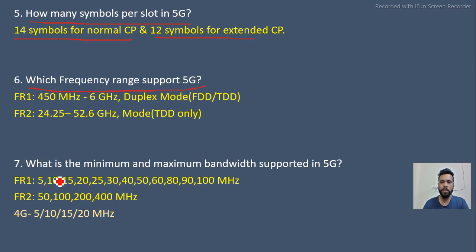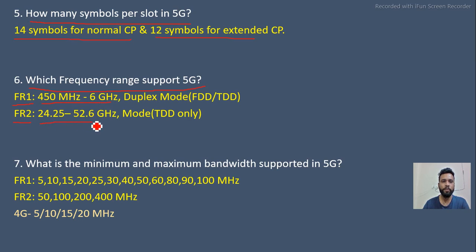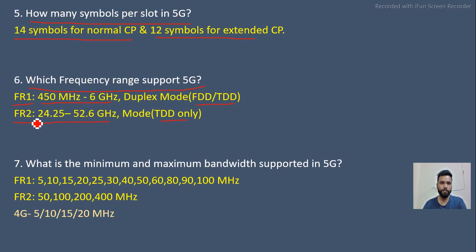In 5G we have two frequency ranges. Frequency Range 1 (FR1) spans 450 MHz to 6 GHz, and Frequency Range 2 (FR2) spans 24.25 to 52.6 GHz. FR1 is used for both FDD and TDD modes, whereas FR2 is used only for TDD mode. FR2 is generally used for millimeter wave — the higher frequency band.